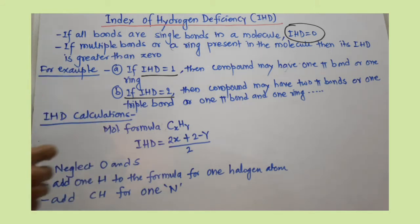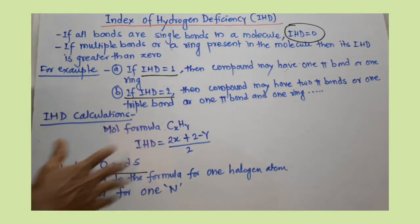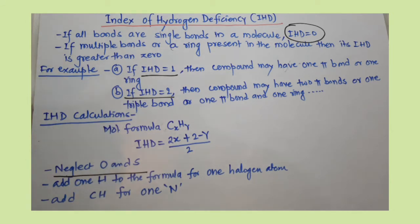But if heteroatoms are there, for oxygen and sulfur, you neglect those heteroatoms because they are not going to affect our IHD. But if halogens are there, like Cl, Br, I, halogens are there...